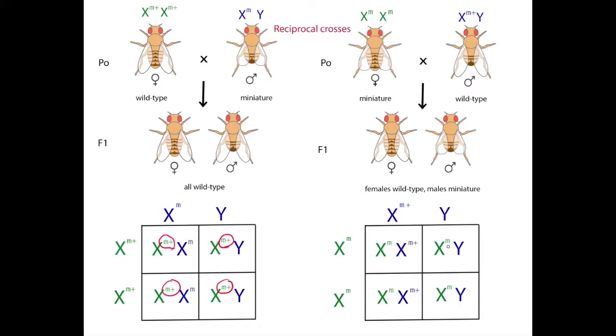Again, all the F1 flies in this cross received an X chromosome from the mother, which in this case carried the m allele for miniature wings. All the female offspring also received a wild-type allele from their fathers. Since wild-type is dominant over miniature, the females display wild-type long wings. Since the males have only one X chromosome, they must express the m allele, so have miniature wings. This pattern of inheritance, in which the sons inherit the trait from their mothers, is an indication of X-linked genes.